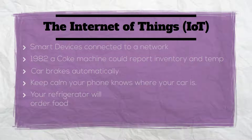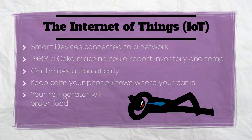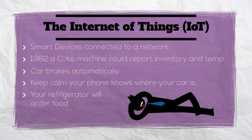As amazing as Web 3.0 is, the Internet of Things, or IoT, begins to take us into the science fiction world of the future. The Internet of Things pertains to connected devices or smart devices. According to Wikipedia, the first one was a Coke machine in 1982 that was able to report inventory and temperature of cans.